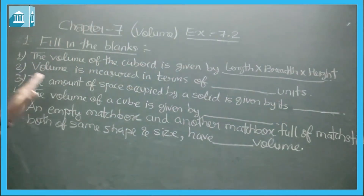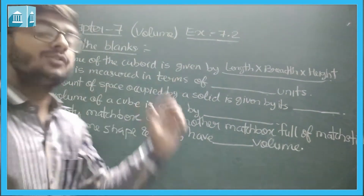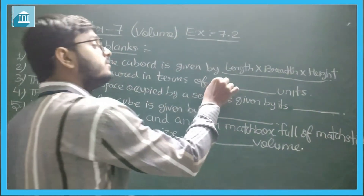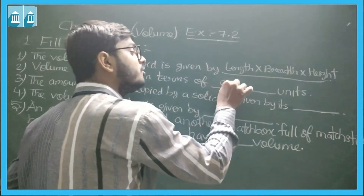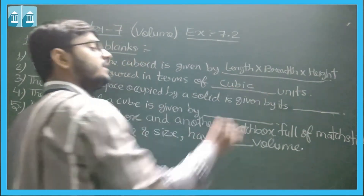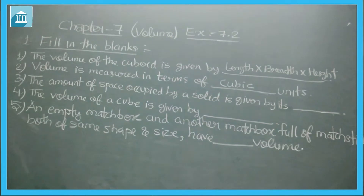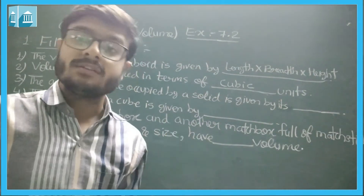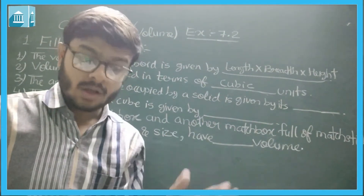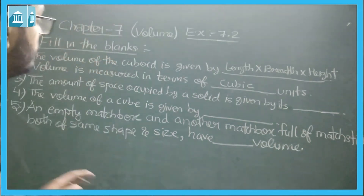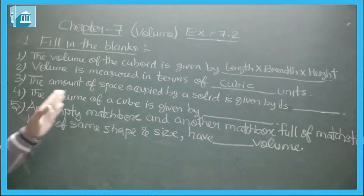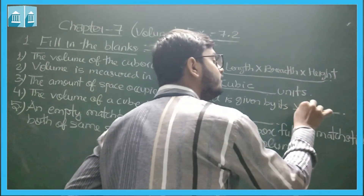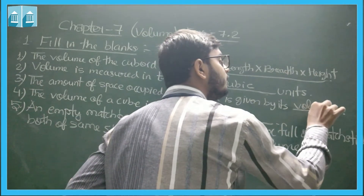The volume is measured in terms of cubic units — we have written cubic meter, cubic centimeter in the first exercise. The amount of space occupied by a solid is given by its volume. This is the definition of volume.